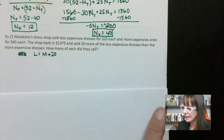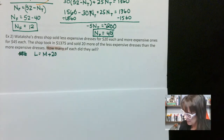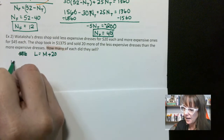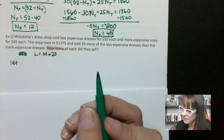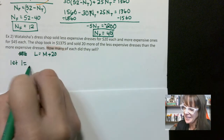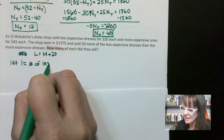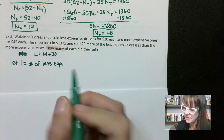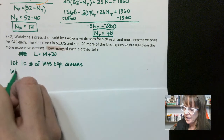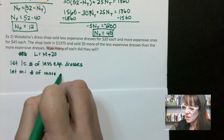Again, 'how many' is the key here with the fancy highlighters. Let L equal the number of less expensive dresses. Let M equal the number of more expensive dresses.